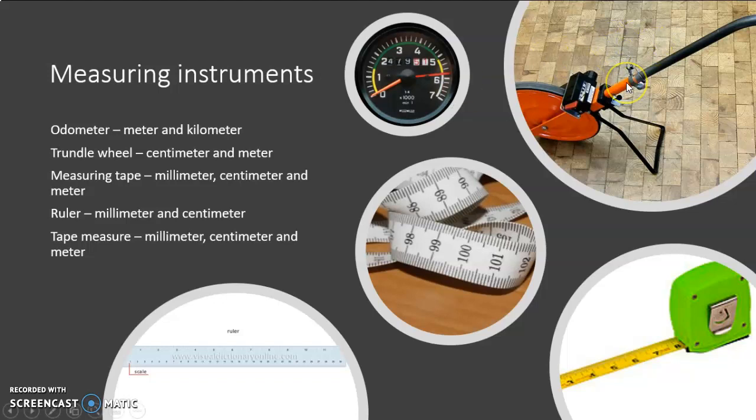Then we have our trundle wheel. It measures centimeters and after every meter it makes a click sound and it has a little odometer here that also shows you the distance. All the trundle wheels did not have this little odometer and you have to keep track of how many clicks you heard.